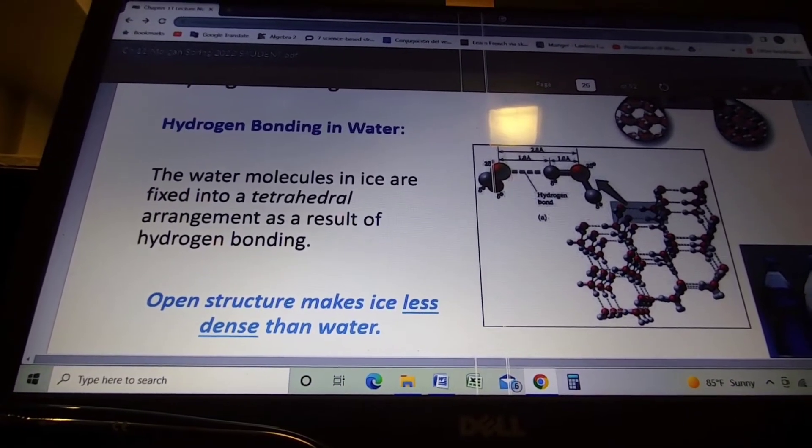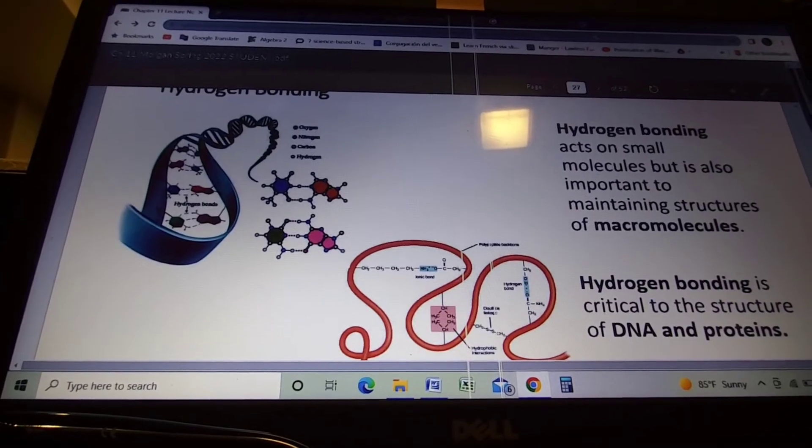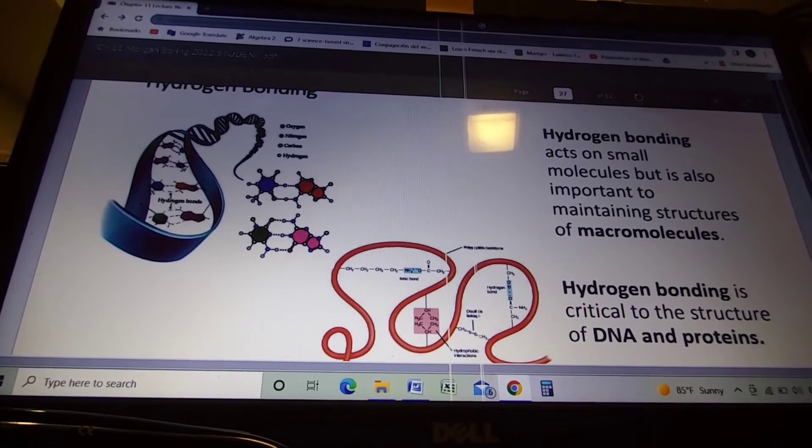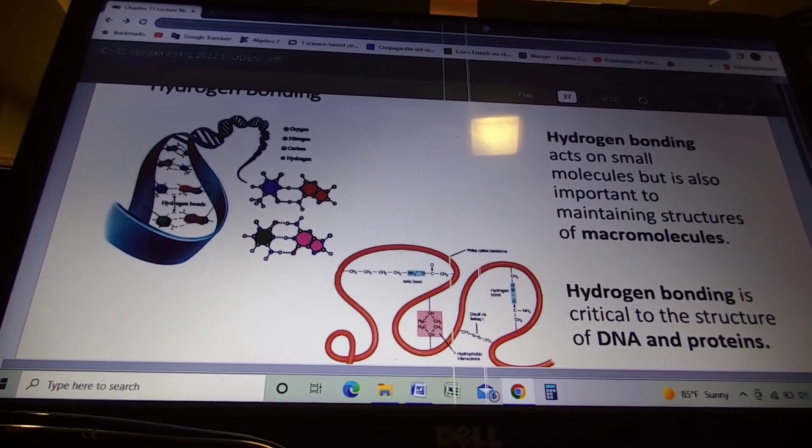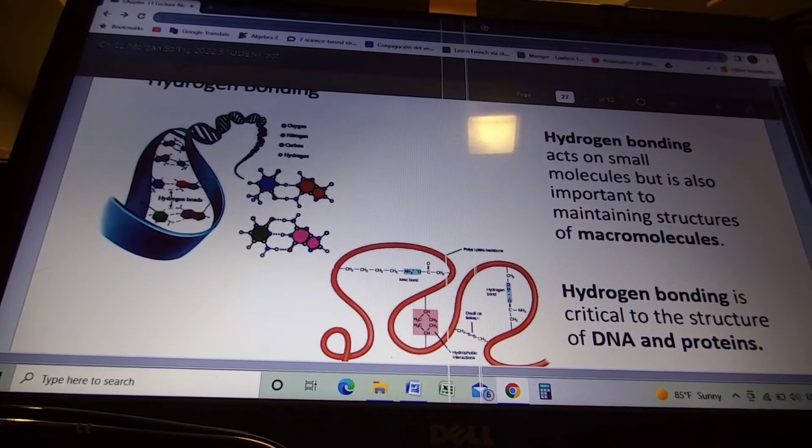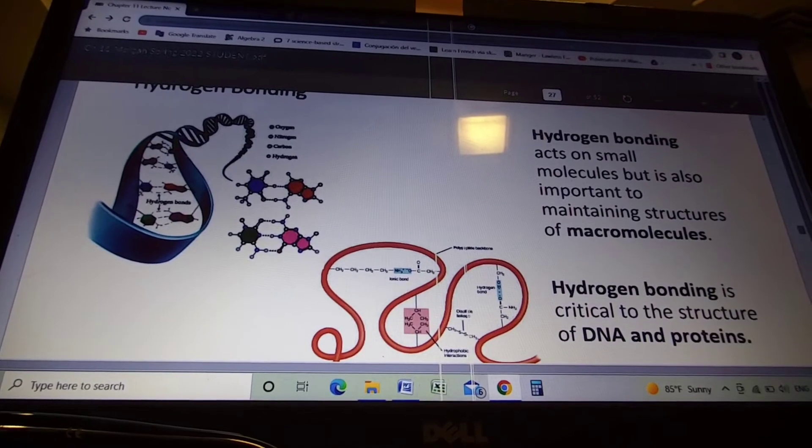Hydrogen bonding is what's responsible for holding the strands of your DNA together. Between your DNA base pairs, the only reason they're held together is because of hydrogen bonds between your adenine and thymine, your cytosine and guanine.